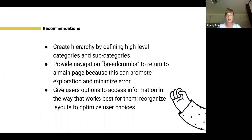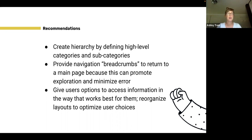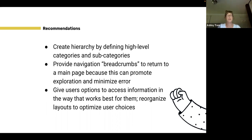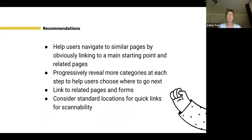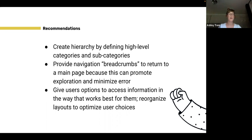A really important and simple thing is providing navigation breadcrumbs — ways that users can return to the main page or the page they were on before. This can really help promote exploration. People can dig in deeper but know they can jump back to the page they were on before. It helps minimize user error and folks feeling like they're getting lost. Breadcrumbs, which you often see at the top left, can be a paginated breadcrumb or just a way to click back to the previous page — really helpful for users. Also, give users options to access information in a way that works best for them, potentially reorganizing layouts to optimize user choice.